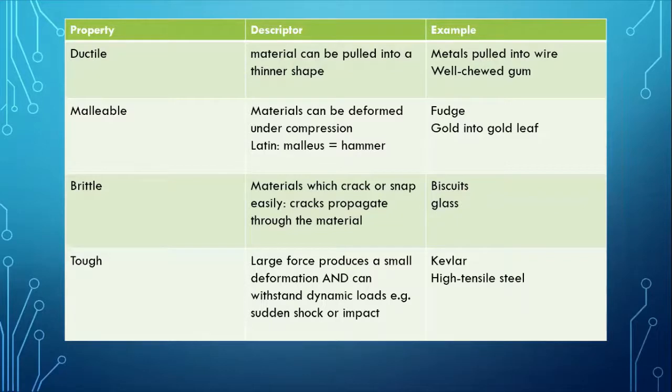A tough material. Well, a large force produces a small deformation and it can withstand dynamic loads, a sudden shock or impact. And as we'll see in a moment, tough materials are good at absorbing the energy of a collision. And of course, Kevlar absorbing the energy of a projectile, such as a bullet or perhaps a knife, high tensile steel as well.